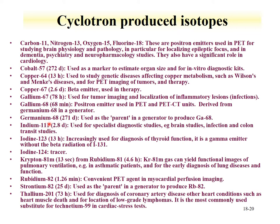A list of cyclotron-produced isotopes includes, in addition to fluorine-18, oxygen, nitrogen, and carbon isotopes used as positron emitters. Germanium-68 is used as a parent to generate gallium-68, which is a positron emitter. Krypton-81 is produced from rubidium-81 and the krypton gas can yield functional lung images. Thallium-201 can be used to diagnose coronary disease and is commonly used as a substitute for technetium in cardiac stress tests.